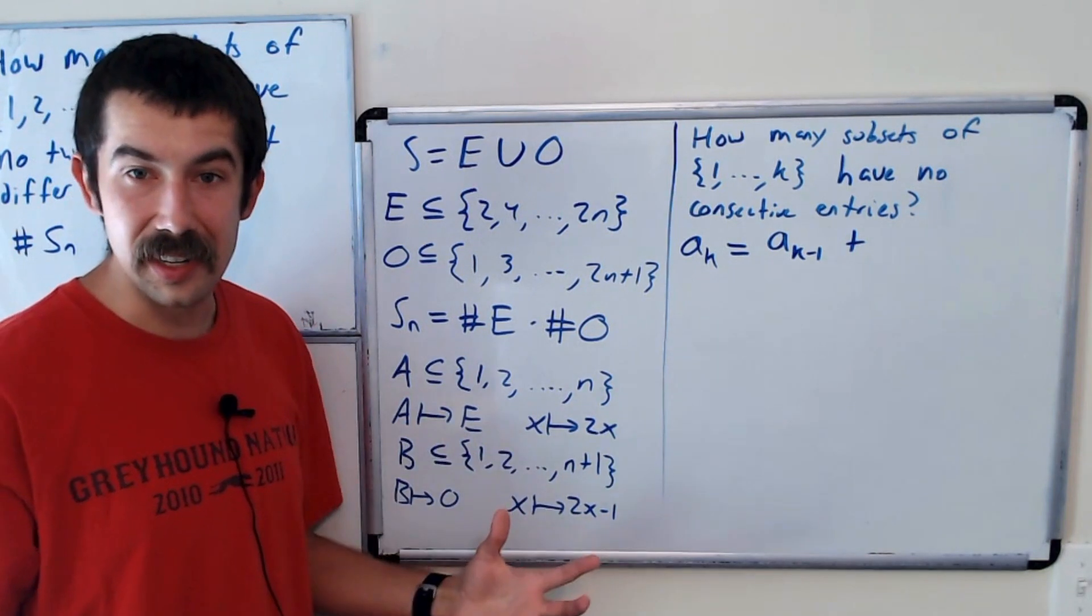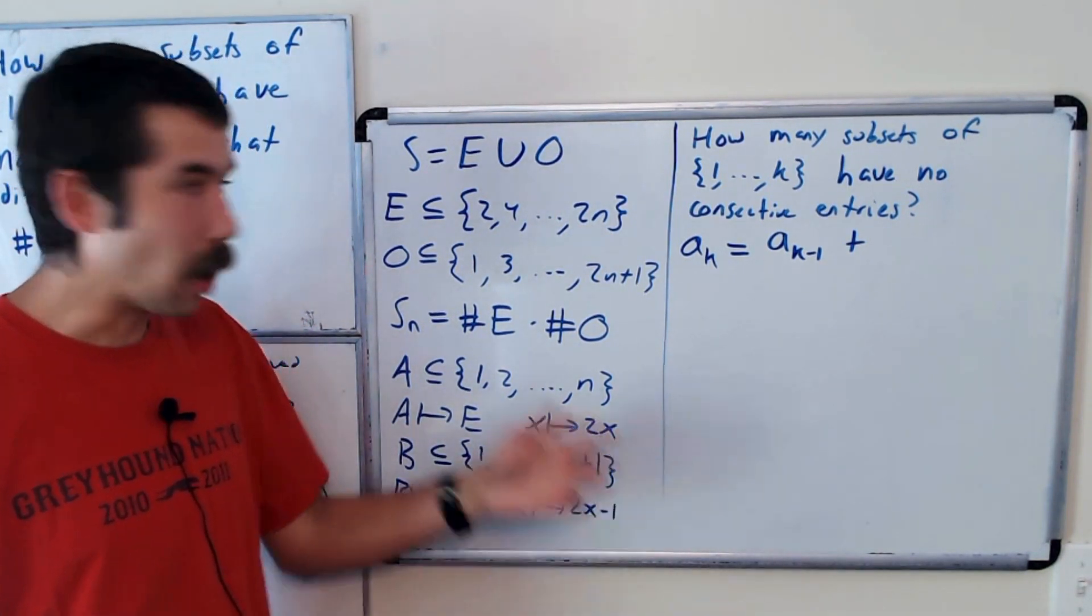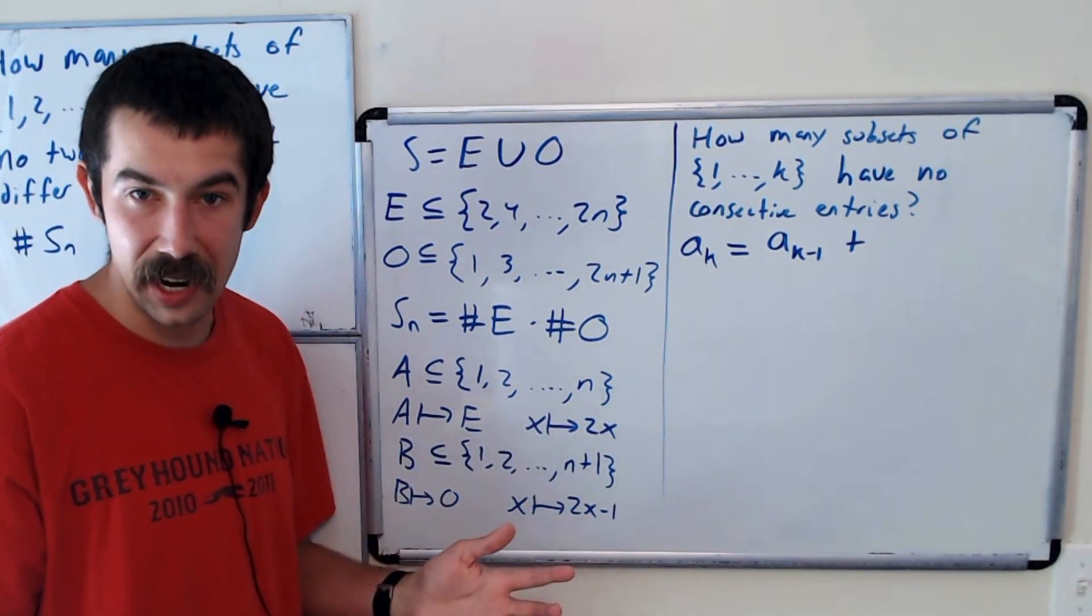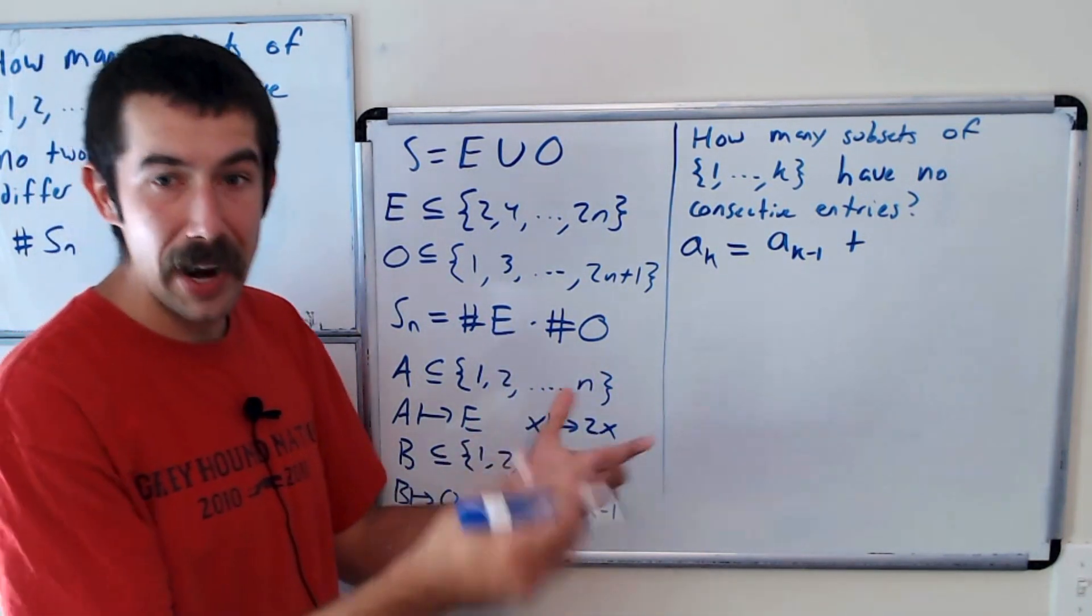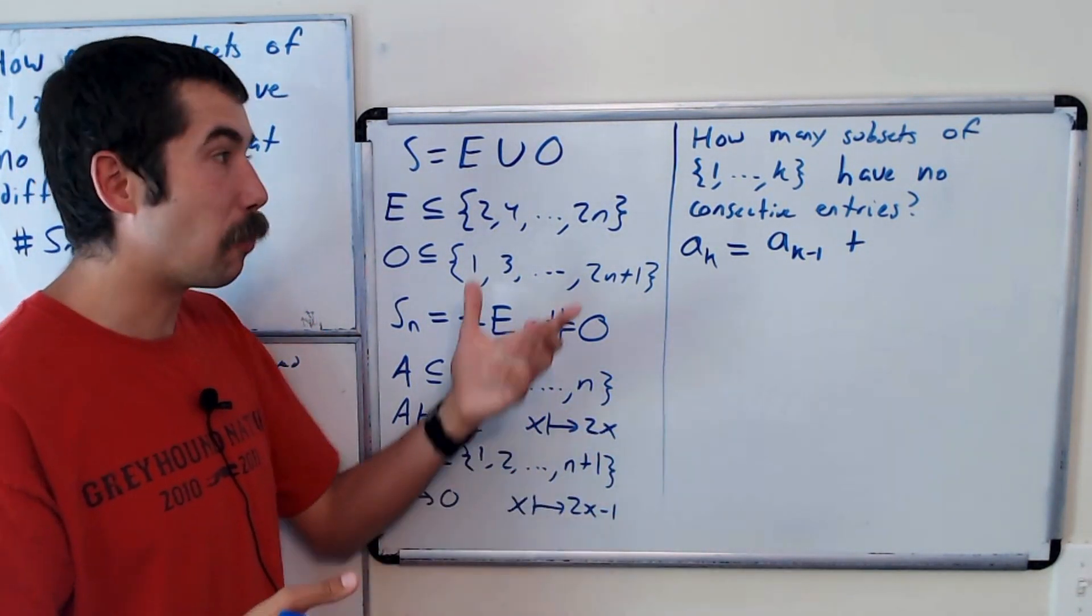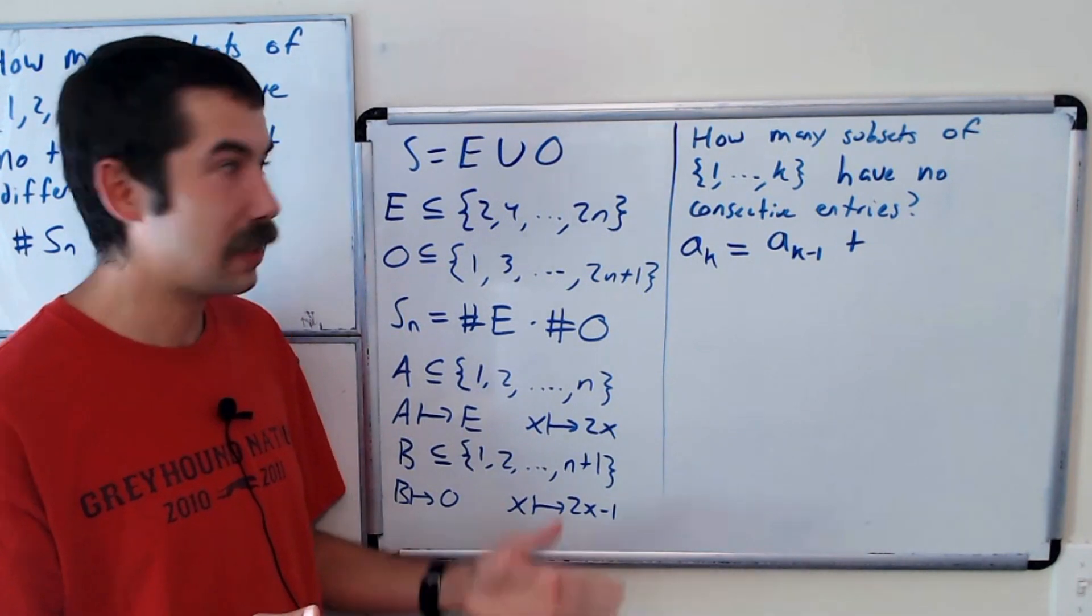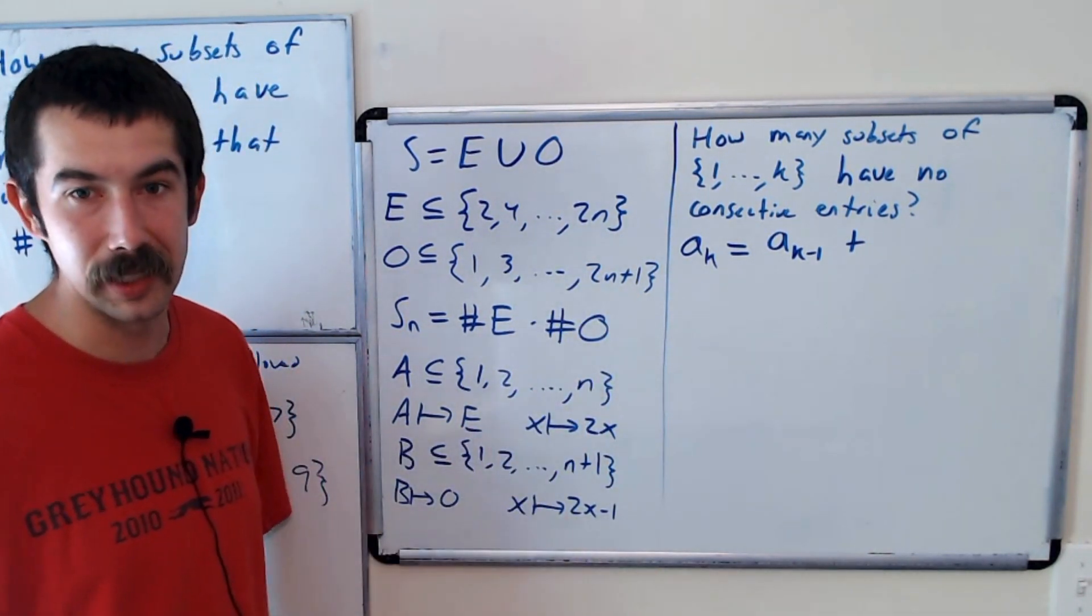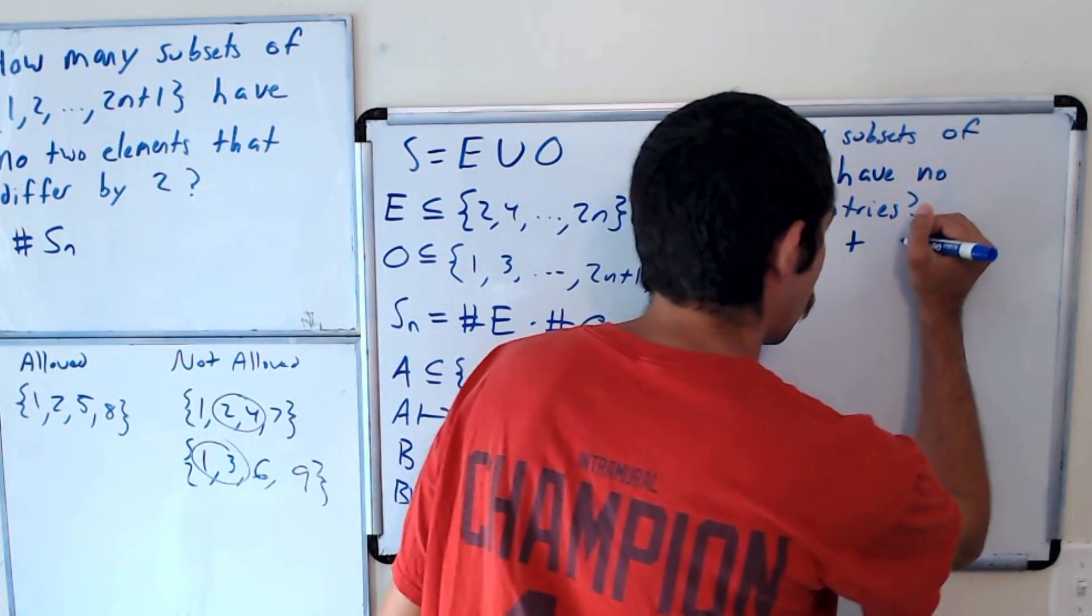If K is in the subset, then we automatically know that K minus 1 is not. And then what's remaining is a subset of 1 through K minus 2 that has no consecutive entries. There's A sub K minus 2 ways to do that.